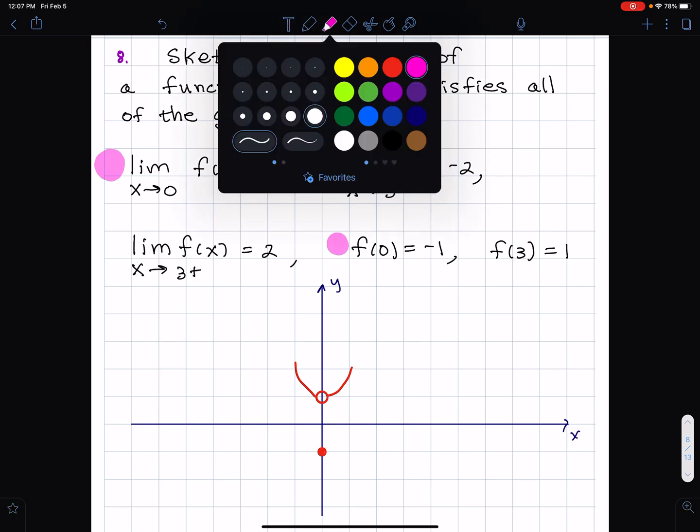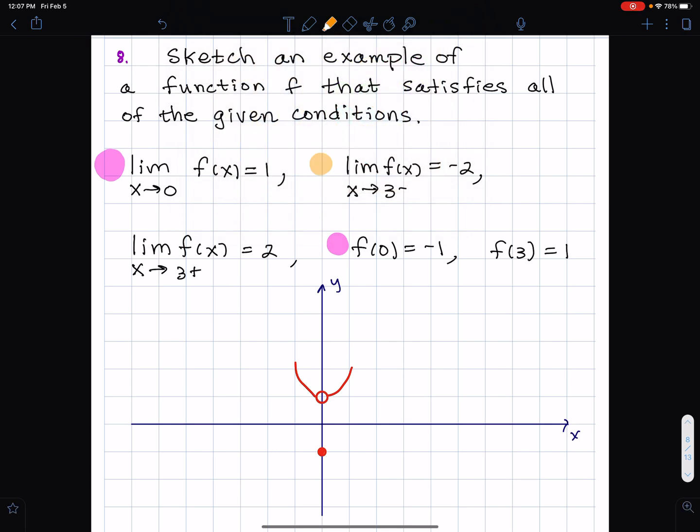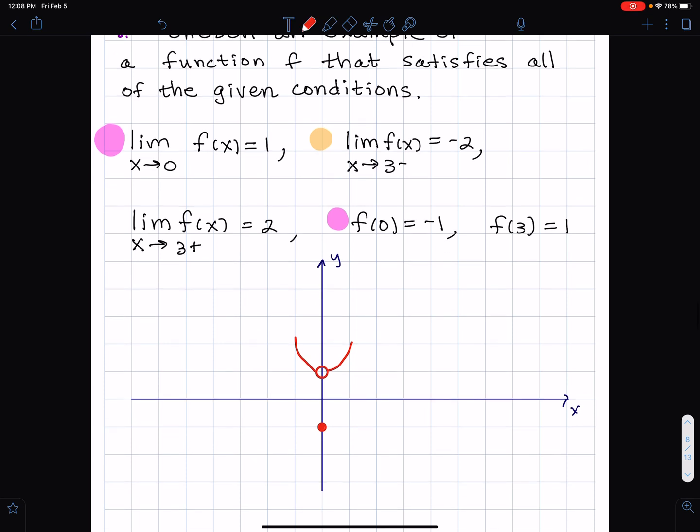The next piece, color coding a little, as x approaches 3 from the left, the limit is negative 2. So if I go to x equals 3, from the left the limit's negative 2. What I'm going to do is put a little circle here and do something like that so that the limit is negative 2. Remember that this is the left of 3.